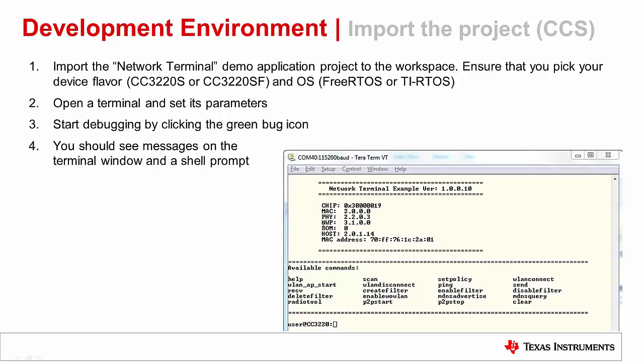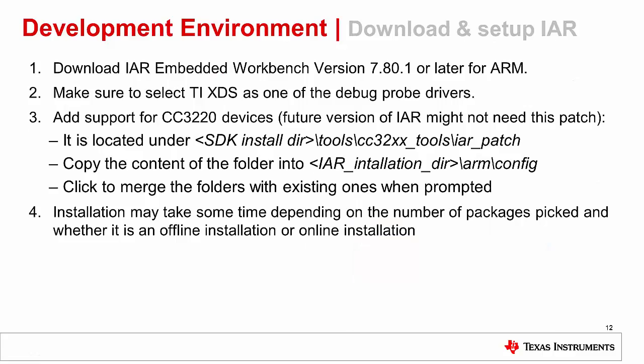Next, we're moving on to IAR. Download IAR Embedded Workbench version 7.80.1 or later for ARM from IAR's official website. During installation, be sure to select TI-XDS as one of the debug probe drivers. You will be prompted to install multiple additional software and drivers — please follow the instructions to finish installation. Finally, if your version does not support CC3220 devices, you will need to add a patch provided in the SDK, located under your SDK install directory, Tools, CC32XX Tools, IAR patch. Copy the content of this folder into the IAR installation directory slash arm slash config, and click to merge the folders with existing ones when prompted.